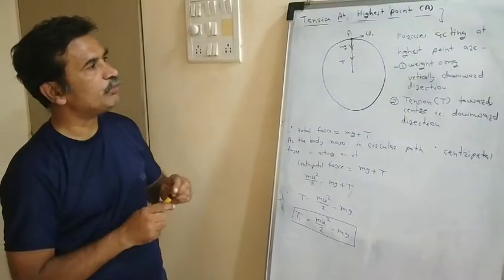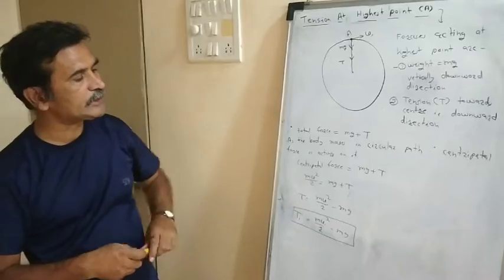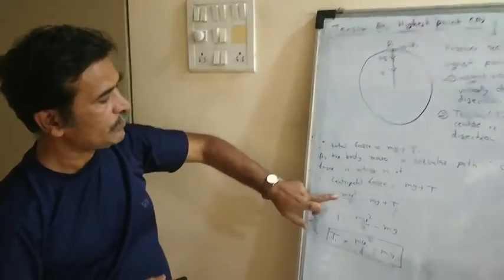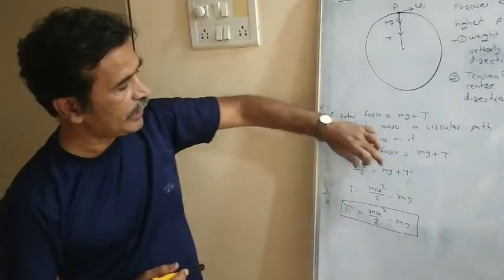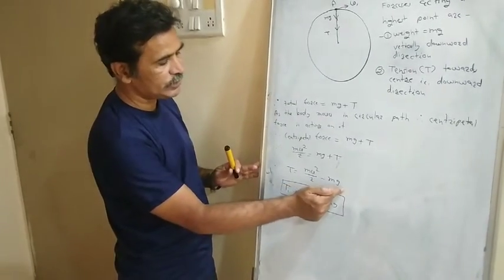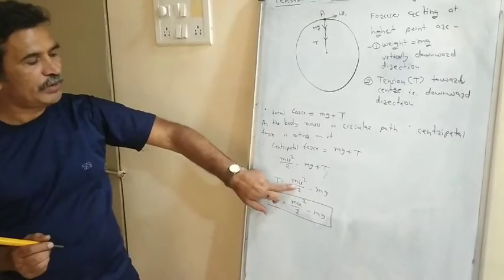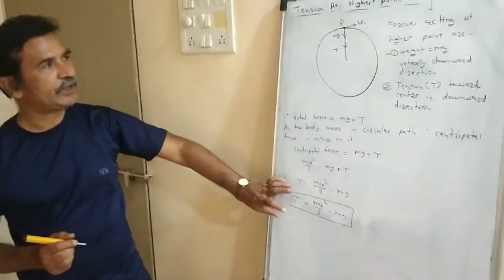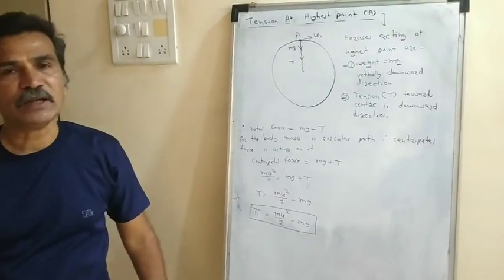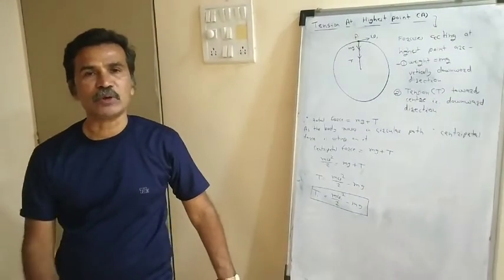At point A, velocity continuously changes. Let v₁ be the velocity at the highest point A. From mv₁²/r = mg + T, rearranging gives: T₁ = mv₁²/r − mg. This is the expression for tension at the highest point in VCM. Next time we will see tension at the bottom point and the difference between tension at the highest and lowest points.